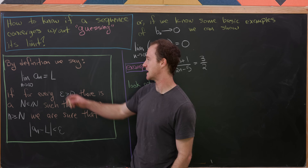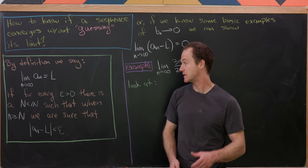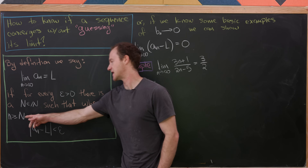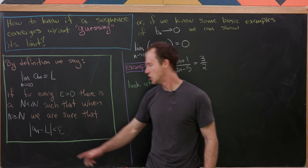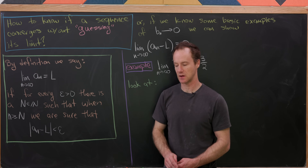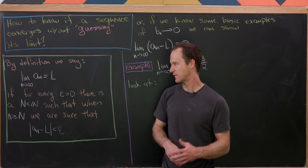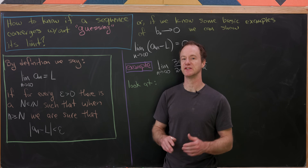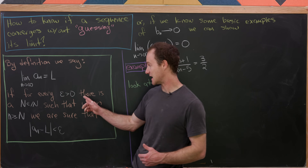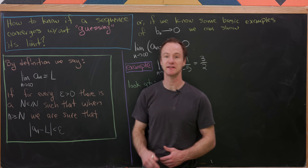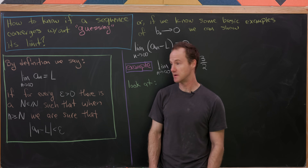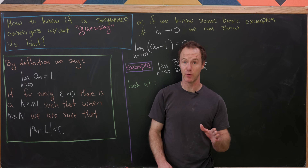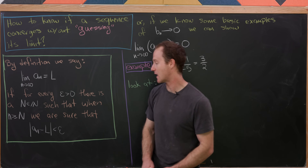By definition, we say that the limit as n goes to infinity of a_n equals L if for every epsilon greater than zero there is a natural number N such that if little n is bigger than or equal to capital N, we have |a_n − L| less than epsilon. Unpacking this, epsilon is a very small number, and capital N is a place in the sequence past which every element is very close to the limiting value L.